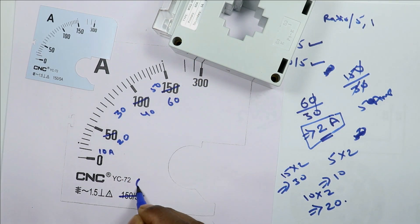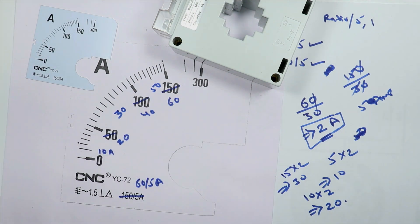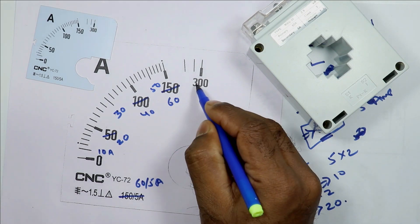This ratio of ammeter is now 60 by 5 ampere. According to this ratio, ammeter will show current. The maximum number of this scaling must also be changed.